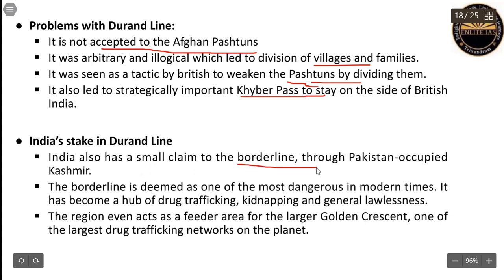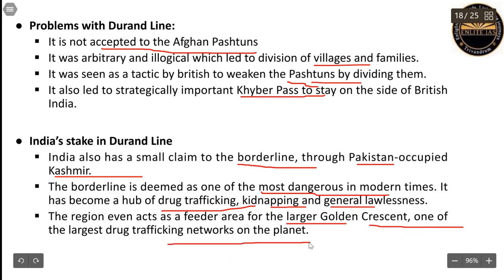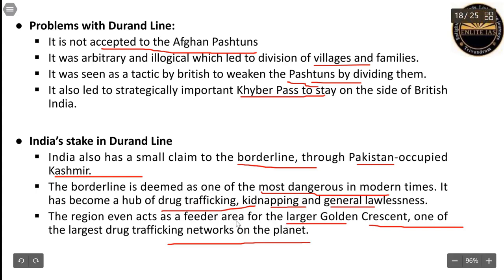India has a small claim in this border at the Pakistan Occupied Kashmir area. This border is considered one of the most dangerous in modern times, famous for drug trafficking, kidnapping, general lawlessness, and it acts as a feeder area for the larger Golden Crescent — one of the major drug trafficking networks in the world. With the rise of the Taliban government in Afghanistan, the Durand Line becomes important from the internal security and organized crimes part of the UPSC syllabus.